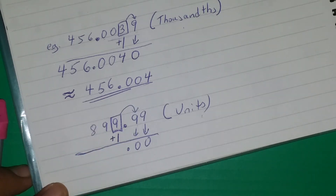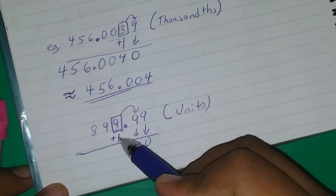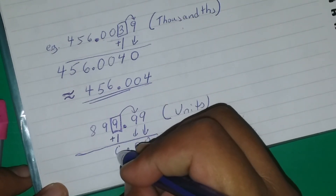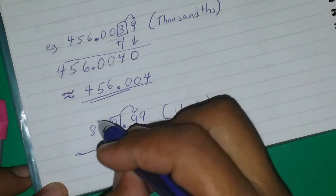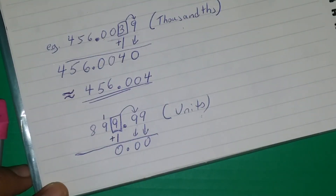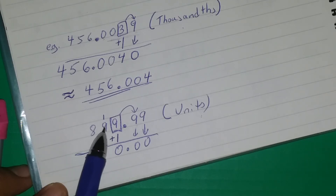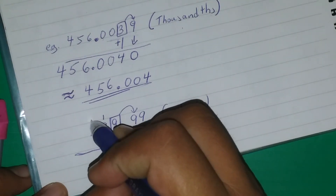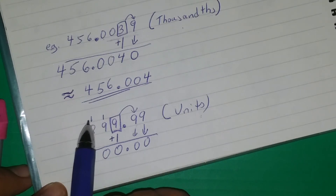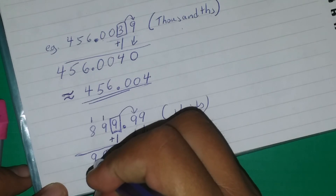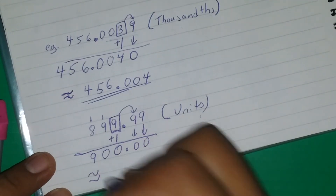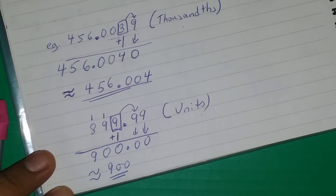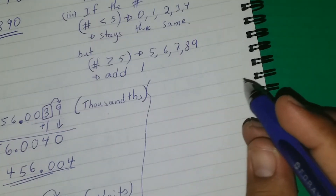Now we do the addition: 9 plus 1 equals 10. Don't write 10 in that position — it's normal addition, so you put the 0 there and carry the 1. Then 9 plus 1 is 10 again — bring down the 0 and carry the 1. Then 8 plus 1 is 9. So the answer is approximately 900.